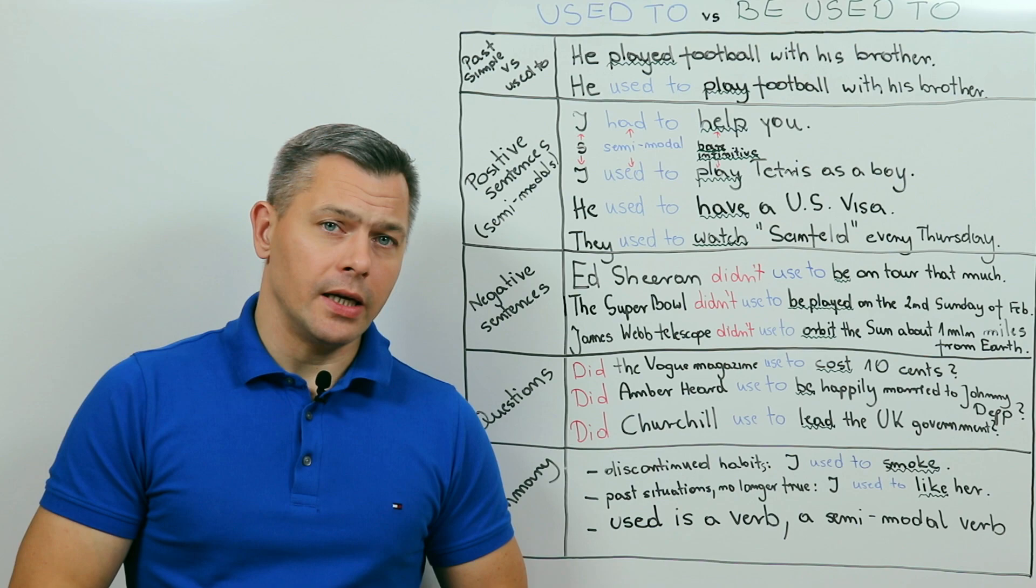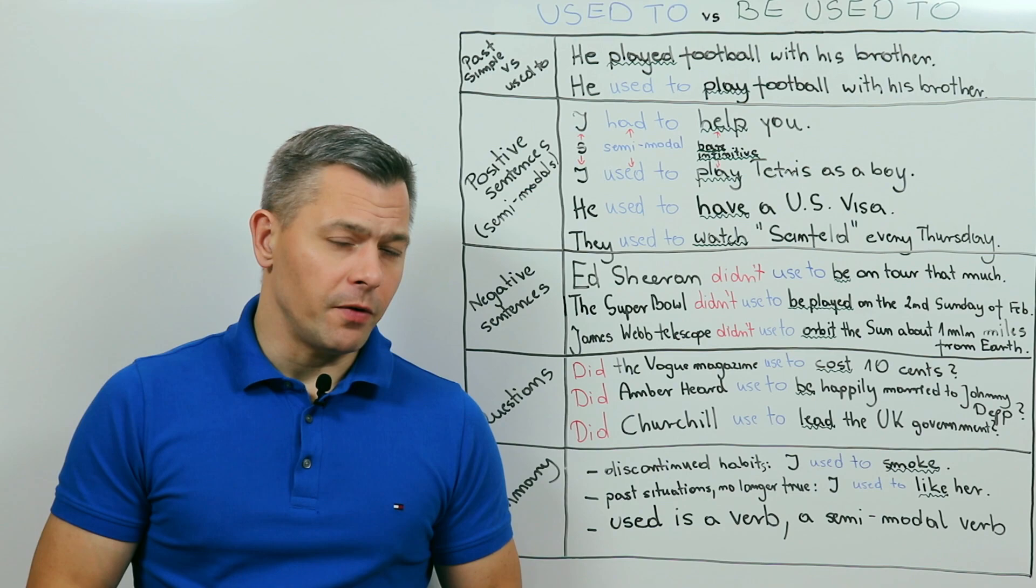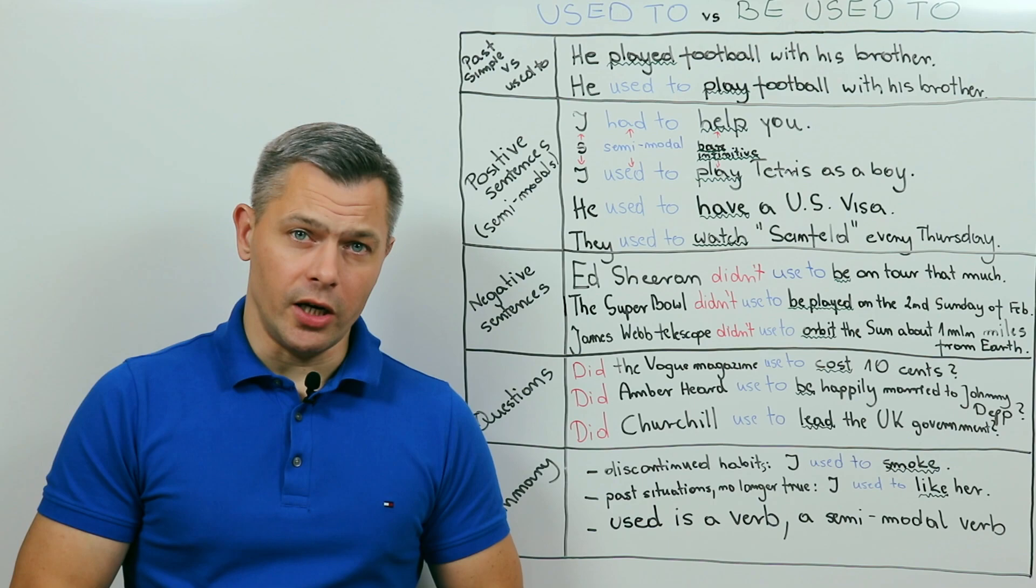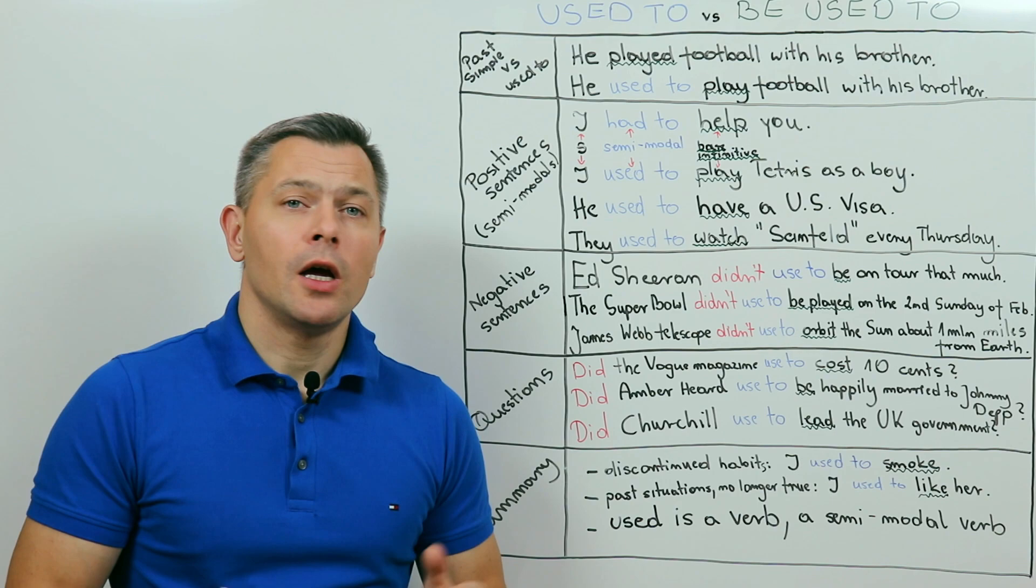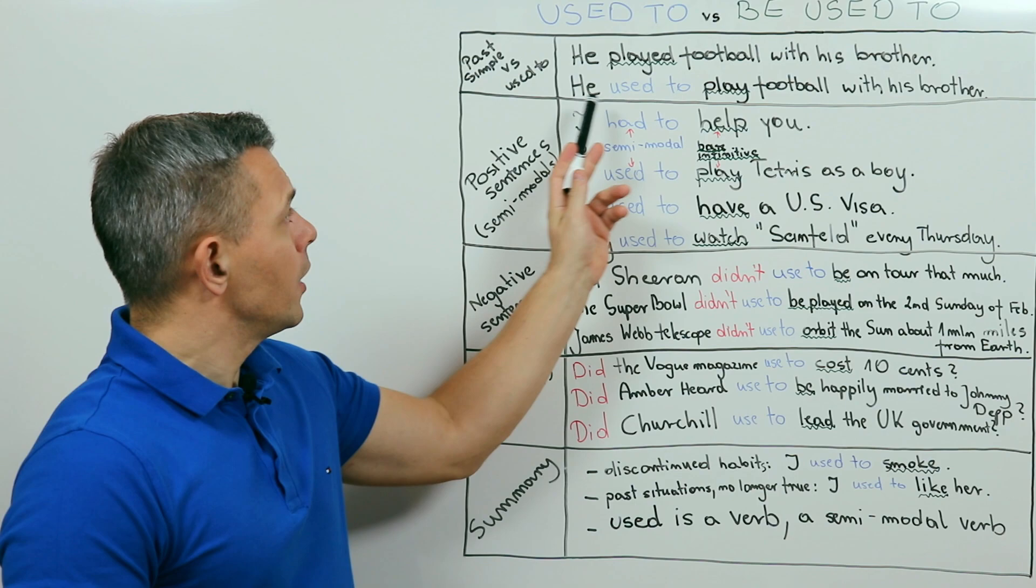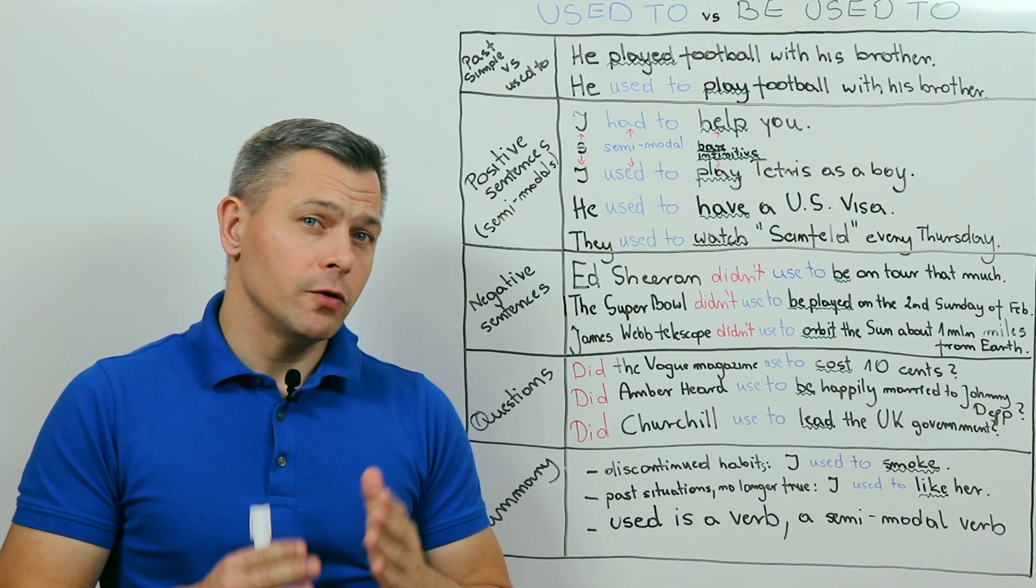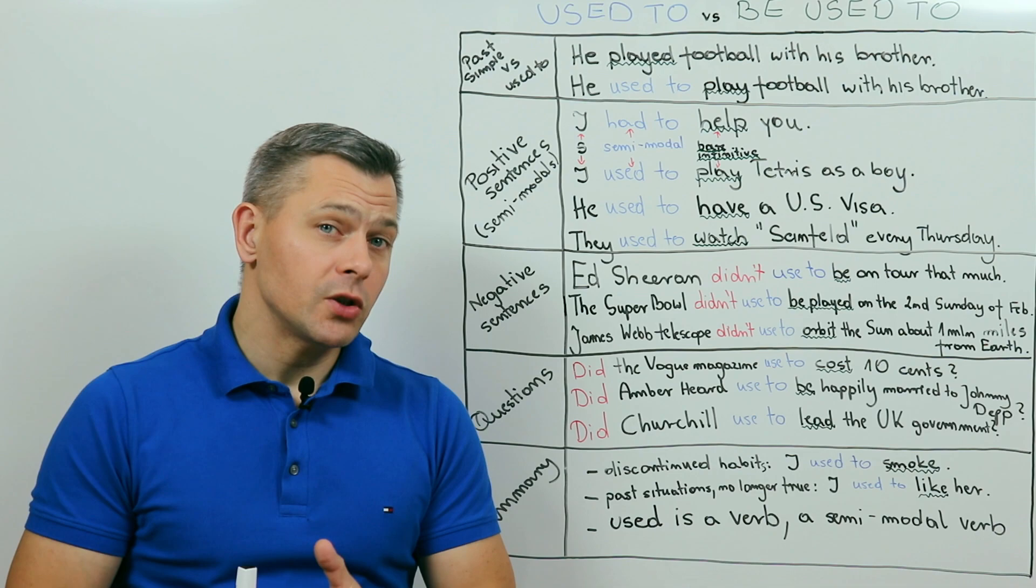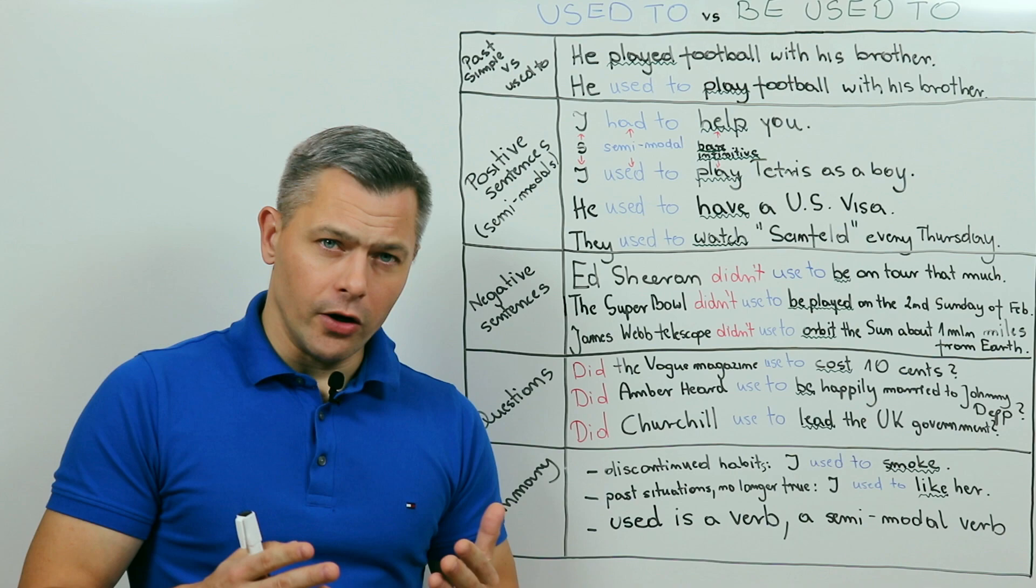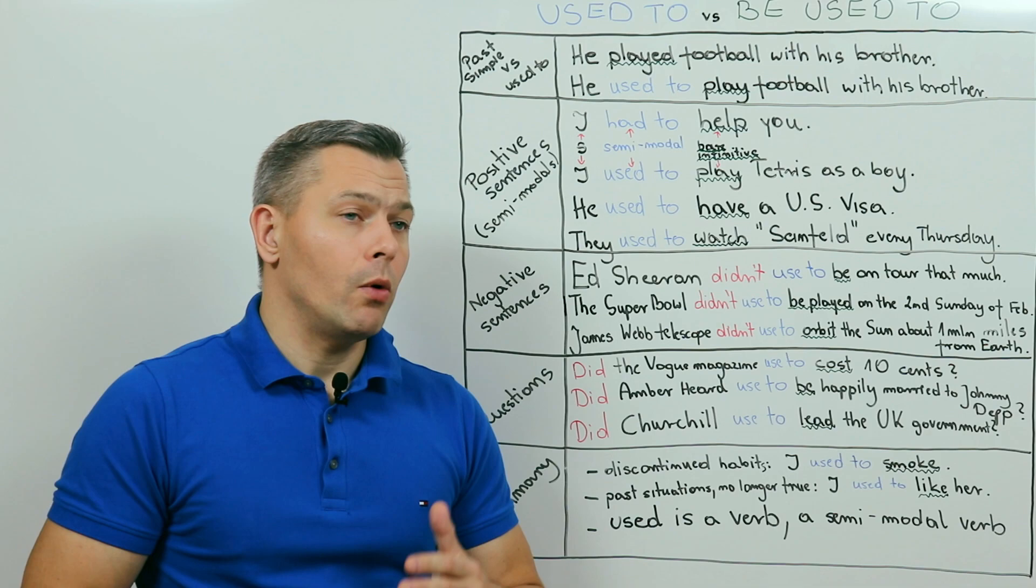Let's now focus on the differences. The most important one is that while past simple informs about what was true in the past, suggesting nothing about what is true now, used to suggests that the situation has changed. So, he played football with his brother - he did it somewhere in the past, but we don't know whether he still plays football with his brother or not. He used to play football with his brother - he did it in the past, but he doesn't anymore. The choice of used to instead of past simple is intentional on the part of the speaker who this way wants to suggest a contrast, a change.